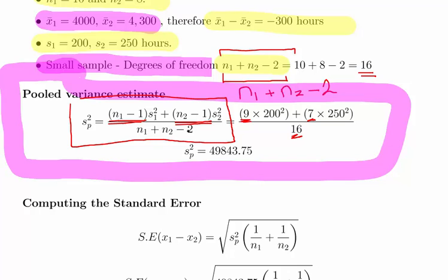Now, essentially what we get here is the sample sizes or the variances which are the standard deviation squared. So a little bit of calculator work. 9 times 200 squared plus 7 times 250 squared all over 16. And that means our pooled variance estimate is 49,843.75.